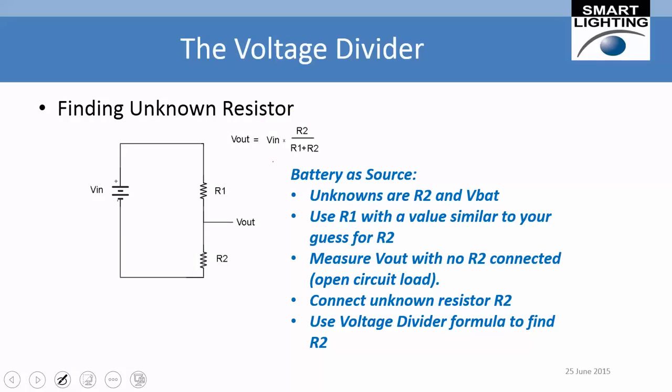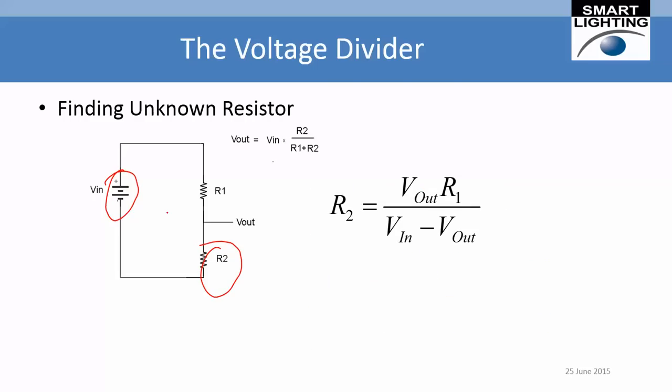We can do exactly the same thing where the unknowns are the battery voltage and R2. The only difference is that because we're measuring across R2 for V_out, the final formula looks a little different. You can stop and think about whether this makes sense — and indeed it does.